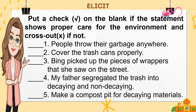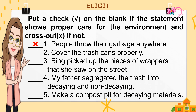Let's have a short review of what you have learned last time. Put a check on the blank if the statement shows proper care for the environment, and cross out if not. Now let's check your answers. Number one: people throw their garbage anywhere — the answer is X or cross out. Number two: cover the trash cans properly — it's a check. Bing picks up pieces of paper she saw on the street — it is check. Number four: my father segregated the trash into decaying and non-decaying — it is check. And last: make a compost pit for decaying materials — it's a check.